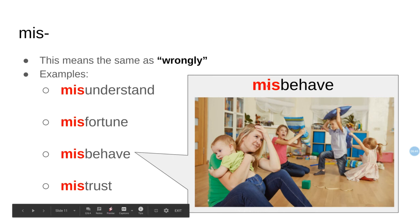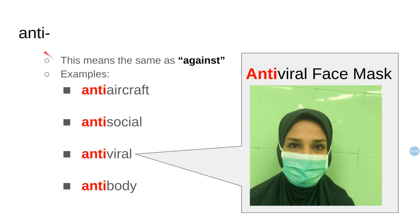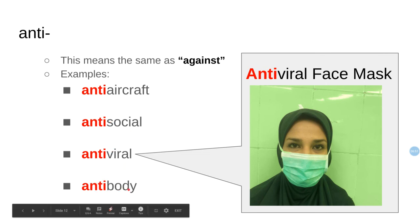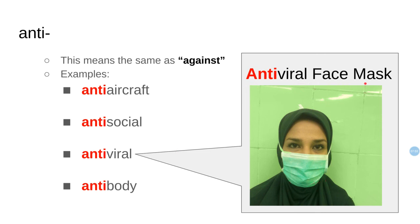Then we have 'anti-,' which means against: anti-aircraft, antisocial, antiviral, antibody. Look at this lady wearing an antiviral face mask — it's a mask against viruses. These are our negative prefixes; a prefix is put at the beginning of a word.